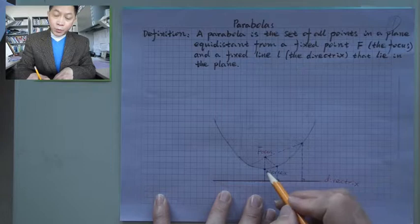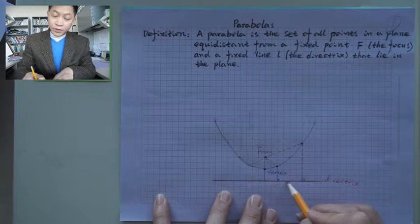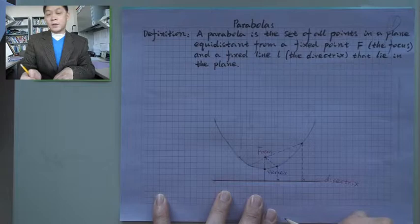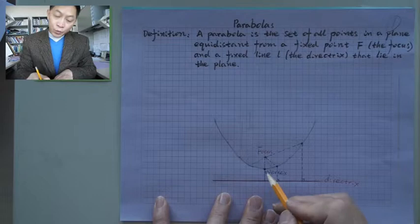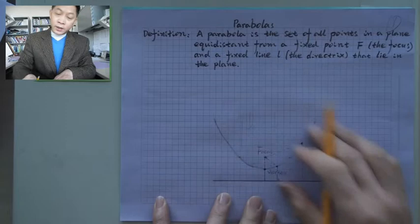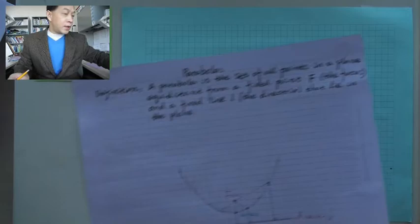This point is very special — it's in the middle between the focus and the directrix. We call this point the vertex. That's the definition. How are we going to find the equation? In order to study that, we may put the vertex and the whole thing in the x-y coordinate plane, putting the vertex on the origin. That's on the following page.